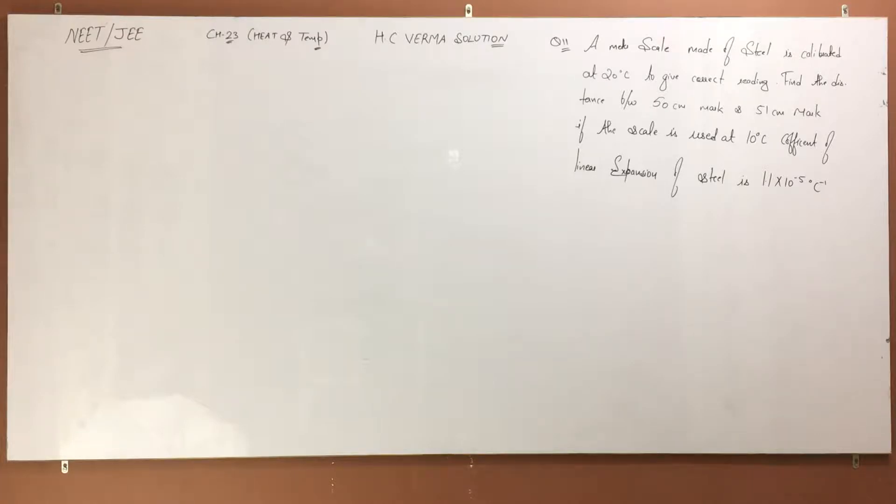A meter scale made of steel is calibrated at 20 degrees Celsius to give the correct reading. Find the distance between 50 centimeter mark and 51 centimeter mark if the scale is used at 10 degrees Celsius and the coefficient of linear expansion is given 1.1 × 10^-5 per degree Celsius. Let's see.